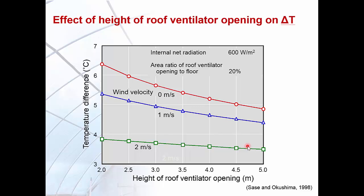When no external wind speed existed, an increase of 1 meter in height yielded a reduction of approximately 0.5 degrees Celsius in temperature rise under high solar radiation. While temperature rise decreased with increased wind velocity, the effect of increased roof opening height decreased with increased wind velocity. This is because the wind effect on greenhouse openings is not considerably affected by the height of the roof opening, and ventilation is driven dominantly by wind compared to the chimney effect.